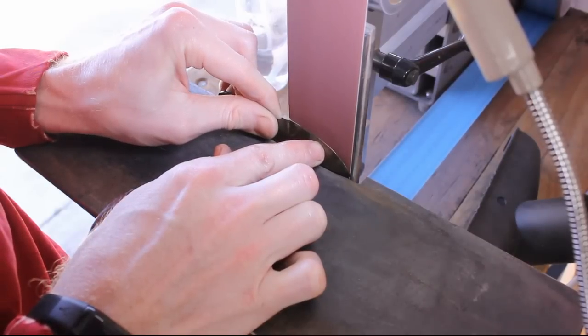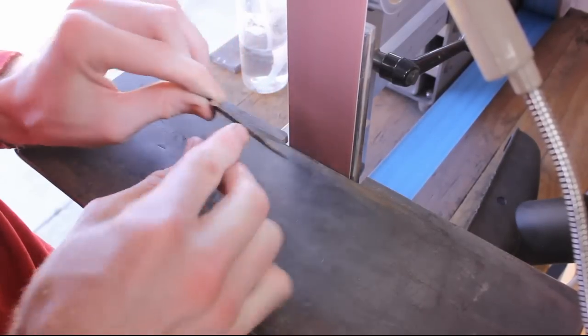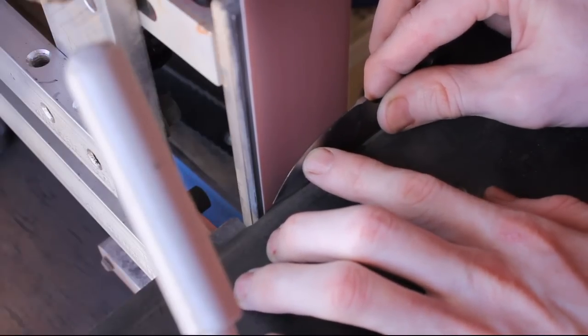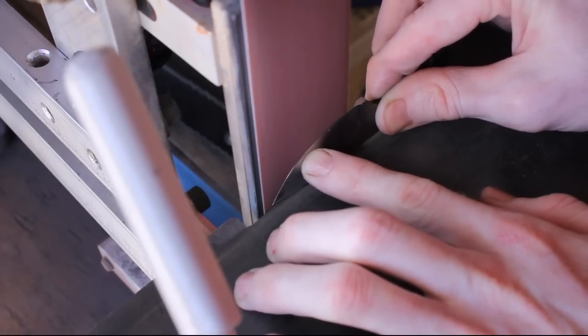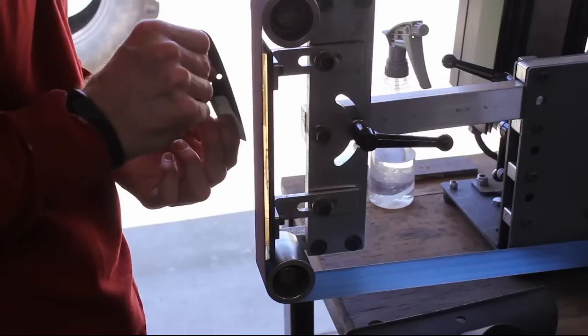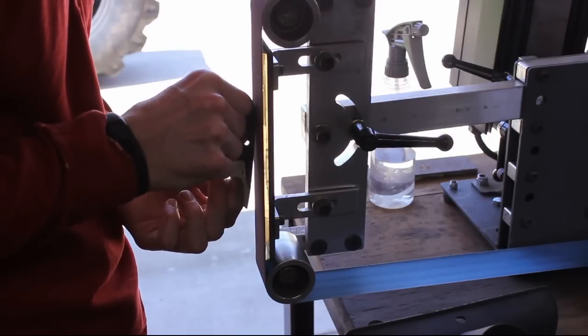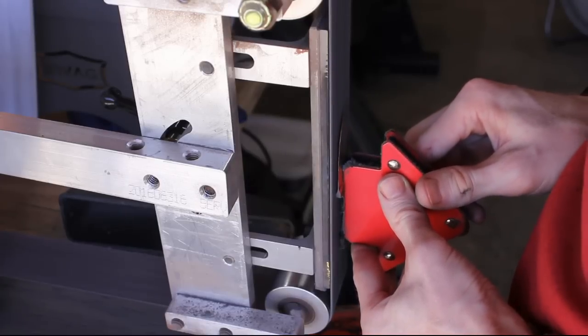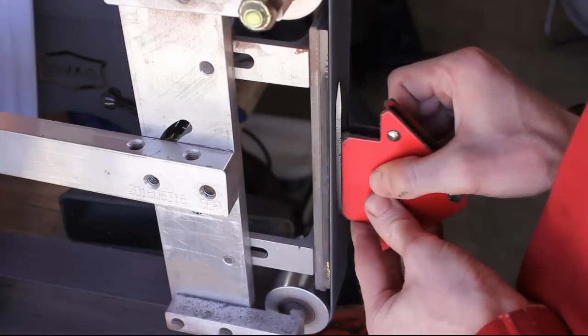Then I'll do some more sanding on the belt grinder. Knock off any scale or residue. Try to get some nice 220 grit scratches going all in the same direction. Clean up the spine and the flats same way. I'm using a gator belt to clean up the flats.